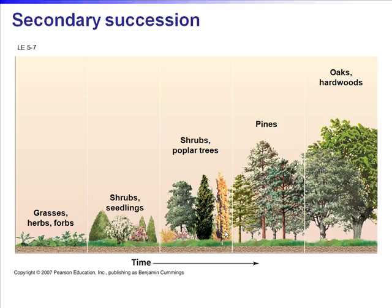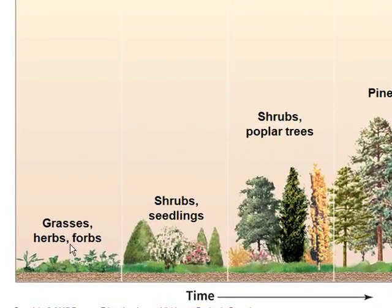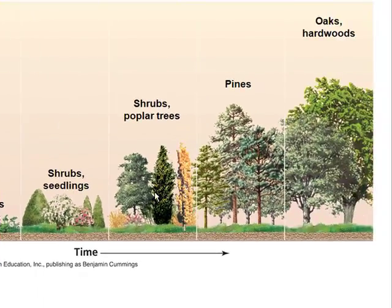Secondary succession begins when a disturbance dramatically alters an existing community but does not destroy all living things or organic matter in the soil. At terrestrial sites, primary succession takes place after bare rock, sand, or sediment becomes newly exposed. Secondary succession begins after a fire, hurricane, logging, or farming removes much of the biotic community. In both cases, pioneer species come in first, changing the soil and creating conditions for the next group of organisms, eventually leading over many years to the classic climax community for that ecosystem.